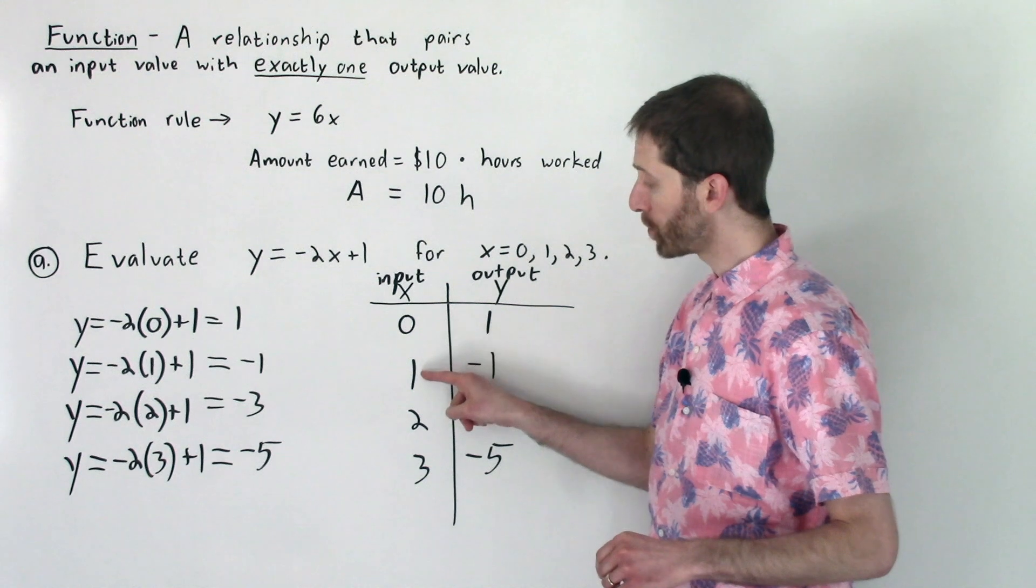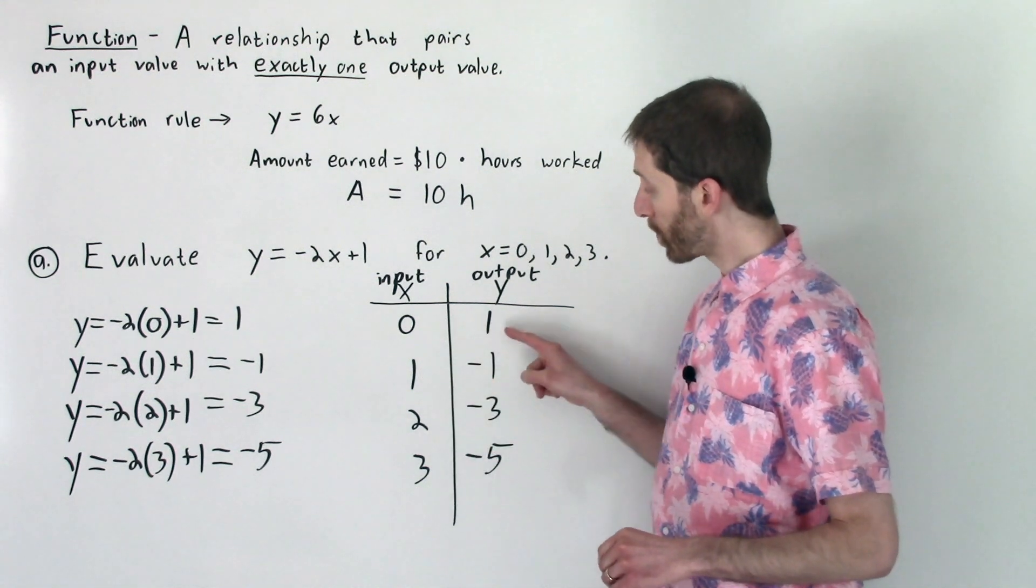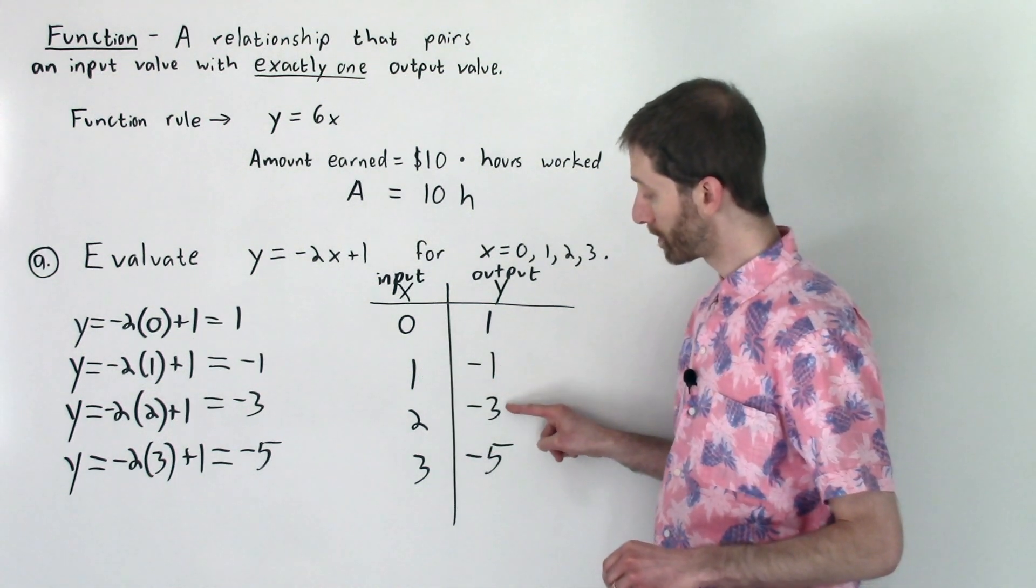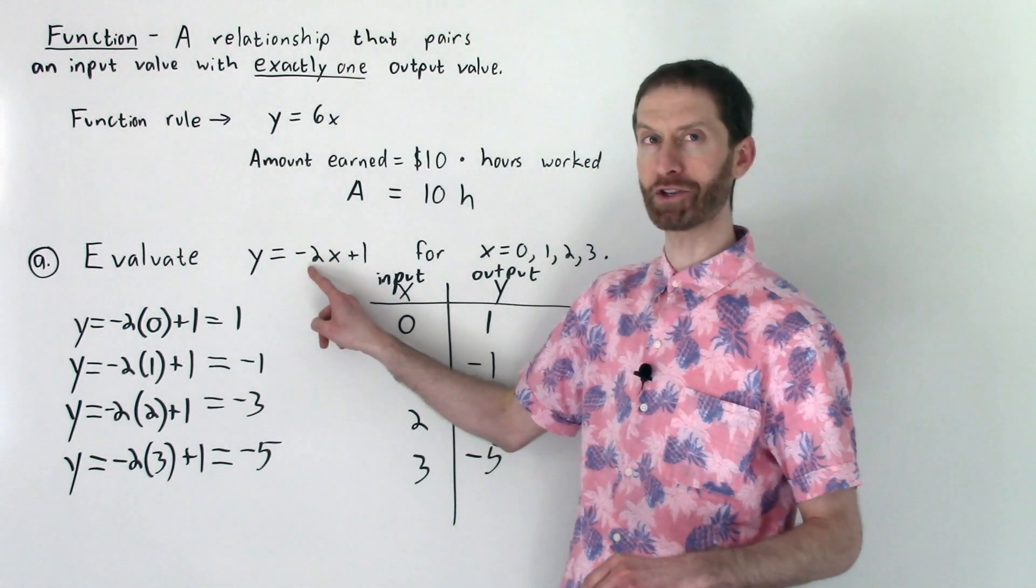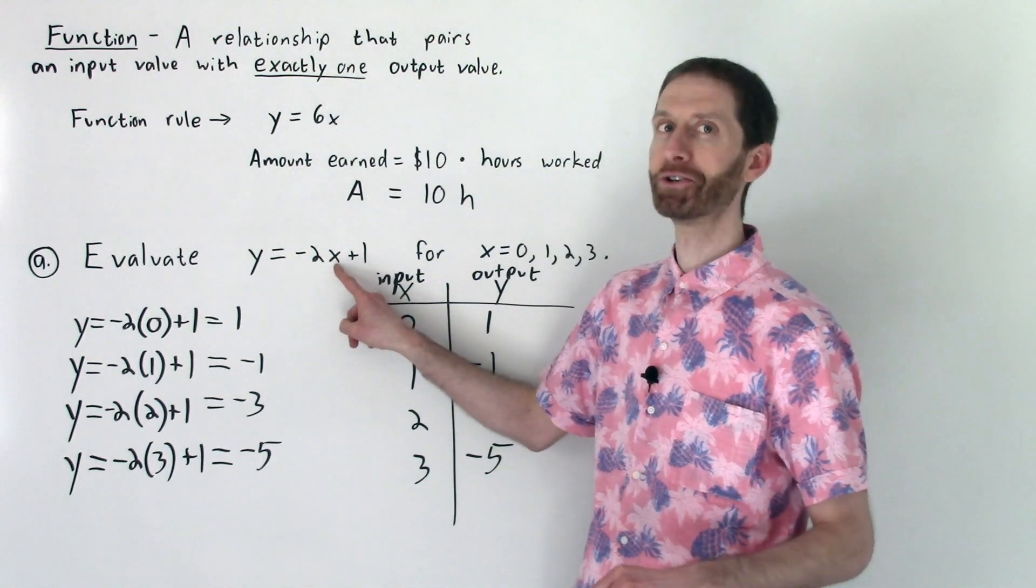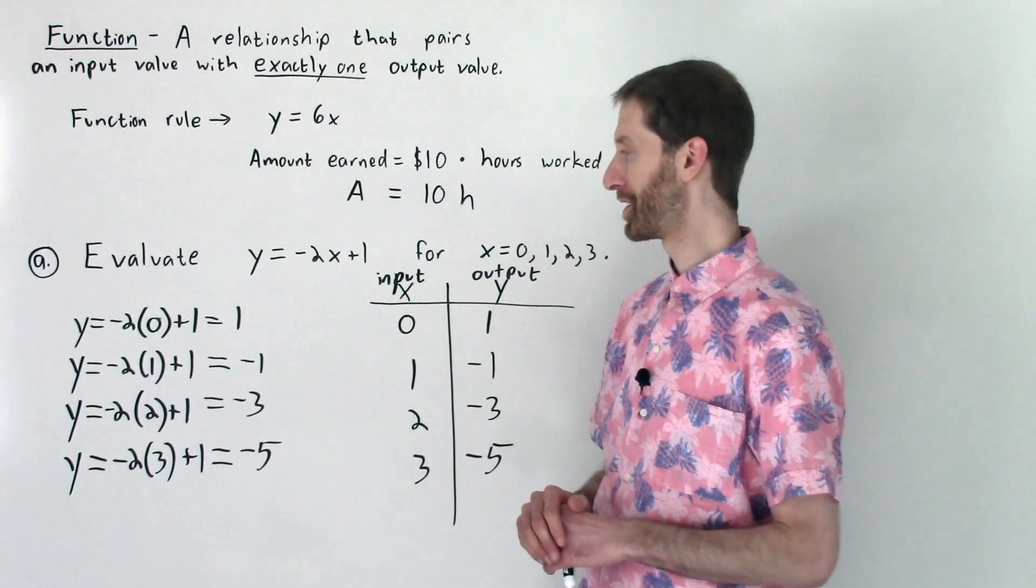Second thing to notice is, for every one value we go up in the x direction, we went down two values in the y direction. Hmm, I bet that had something to do with this negative 2 times each x. Oh yeah, more on that in a later video.